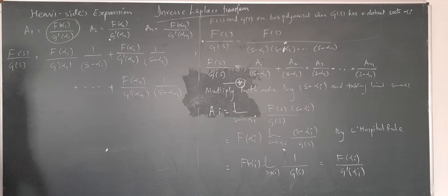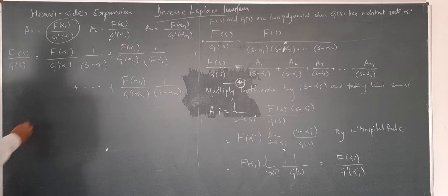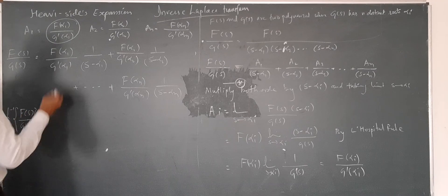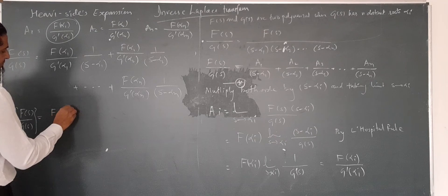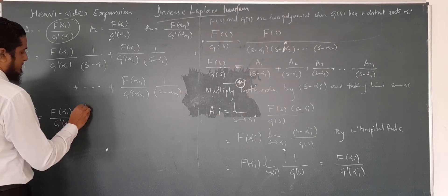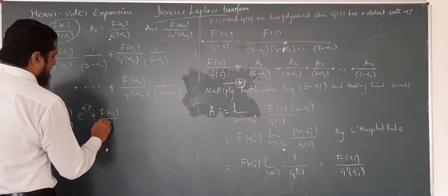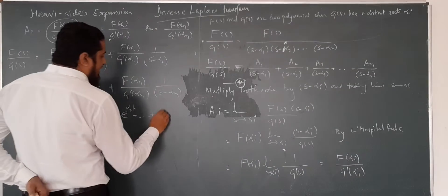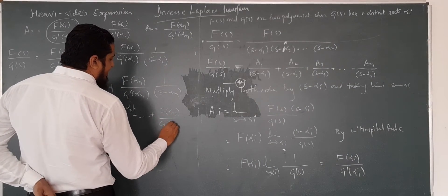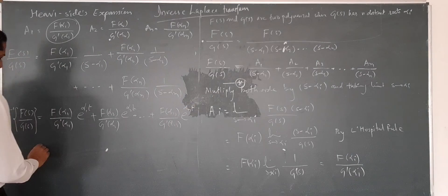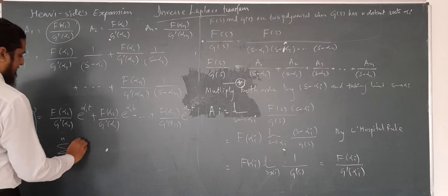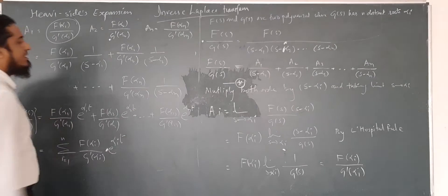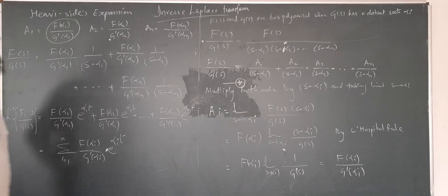Taking the inverse Laplace transform on both sides, we will get f(alpha_1)/g'(alpha_1) times e raised to alpha_1 t, plus f(alpha_2)/g'(alpha_2) times e raised to alpha_2 t, and so on up to f(alpha_n)/g'(alpha_n) times e raised to alpha_n t. We can write this as the summation from i=1 to n of f(alpha_i)/g'(alpha_i) times e raised to alpha_i t. This is the required result for this theorem, and we have easily proved it.